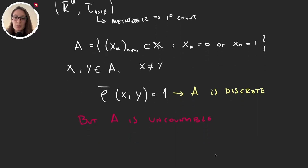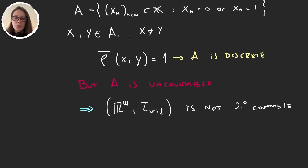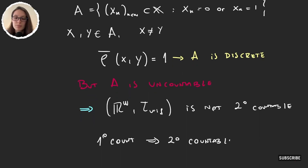This implies that ℝ^ω with the uniform topology is not second countable. Therefore, ℝ^ω with the uniform topology is a first countable space that is not second countable, showing that first countability does not imply second countability. We will continue learning about these axioms in the following videos.